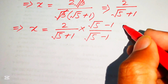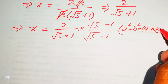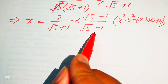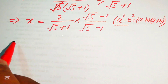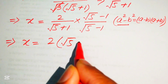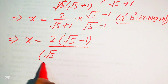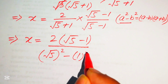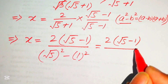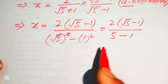We apply the difference of squares formula: a² − b² = (a − b)(a + b). So the denominator becomes (√5)² − 1² = 5 − 1 = 4. This gives x = 2(√5 − 1) / 4.